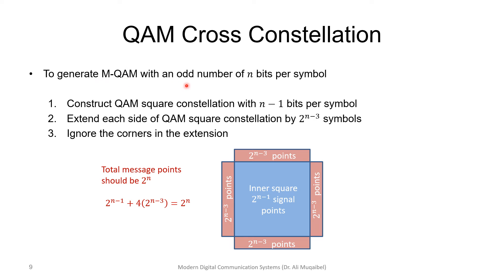We're sharing a systematic way of generating the constellation. To generate M-QAM with odd number N bits per symbol, we can construct QAM with N-1, which is square. For example, if N equals 5, which results in 32 points, I can start by finding for N-1, which is 4, which is 16.